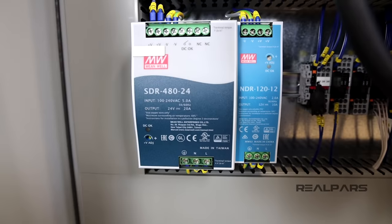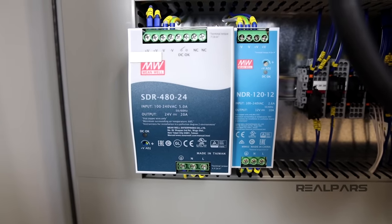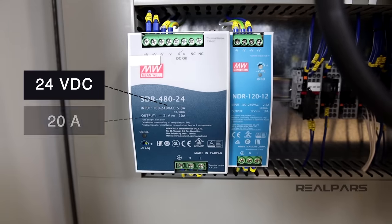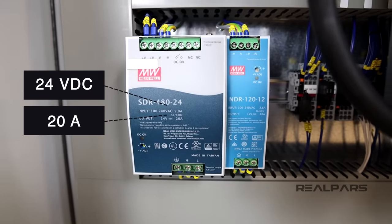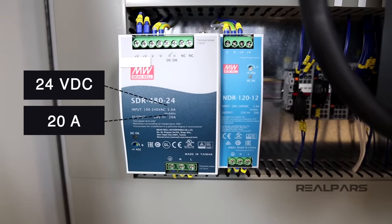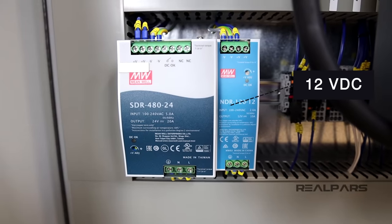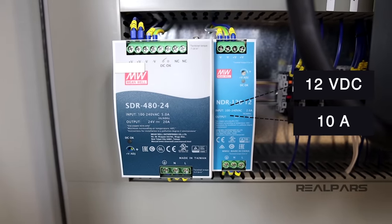Alright, here, we also have the power supplies. The bigger one has 24V DC output voltage, and 20A, or sometimes shortened to Amp or Amps, output current. The small one has 12V DC output voltage, and 10A output current.